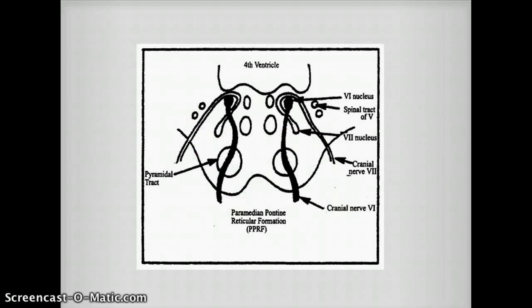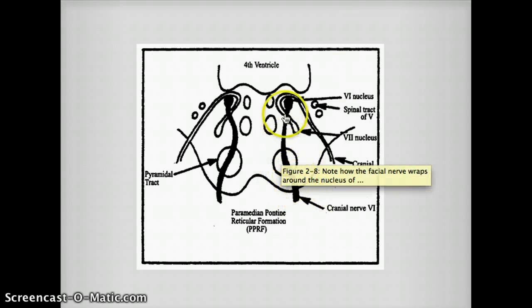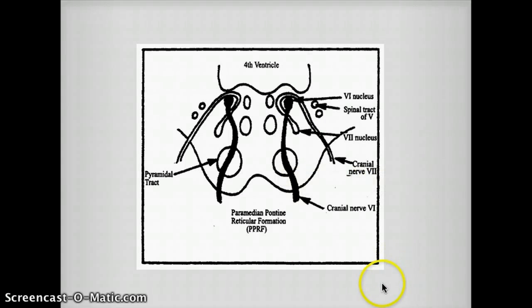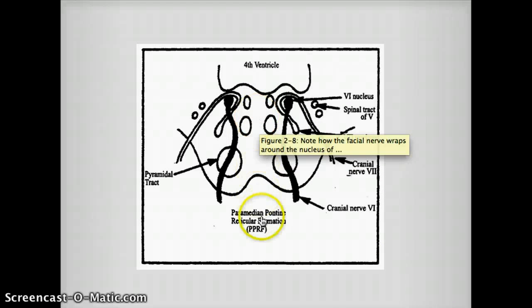The last picture is a simplified version of medial inferior pontine syndrome. You can see this is the corticospinal tract, this is cranial nerve 6, and this is the cranial nerve nucleus. This is the facial nucleus, which is not affected in medial pontine syndrome. Somewhere along the line there is also the corticospinal tract, not visible in this diagram.